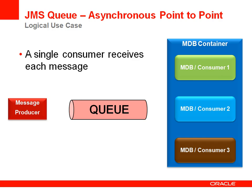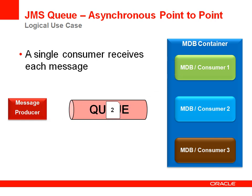There are two logical use cases for messaging with JMS. The first is an asynchronous point-to-point model where each message that is placed on the destination is received by only one consumer. For this model, JMS queues are used.